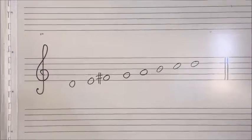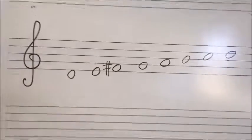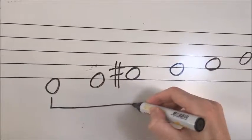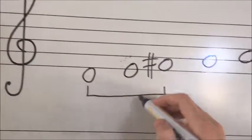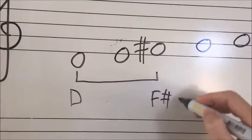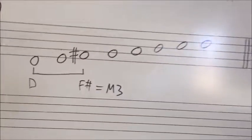This next example in identifying scales without a key signature, you follow exactly the same approach. So the first note, the tonic, to the note that is creating the third harmony. Looks like we've got a D to an F sharp, and that is a major third. So we've got some kind of major scale here.